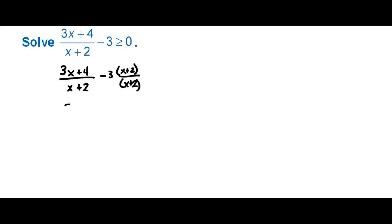So then I'm going to get 3x plus 4 minus 3 times x plus 2, and then since they now will have the same denominator, I can combine them over x plus 2. Again, that's all greater than or equal to 0.